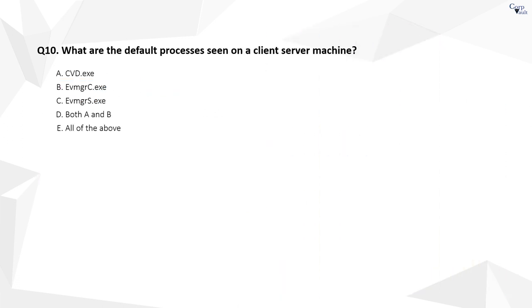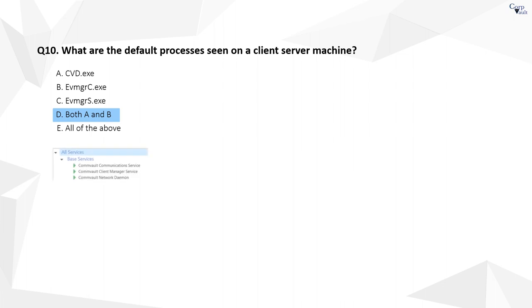Question 10. The correct answer is D. Commvault base services include Communication service (CVD), Client manager service (EVMGRC), and Network daemon service (CVFWD).